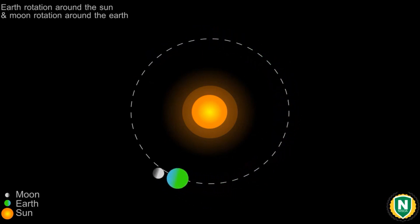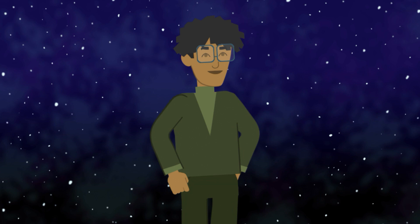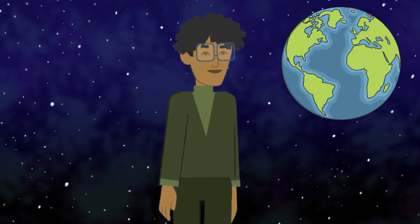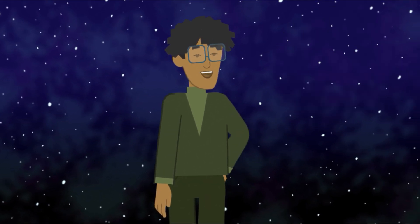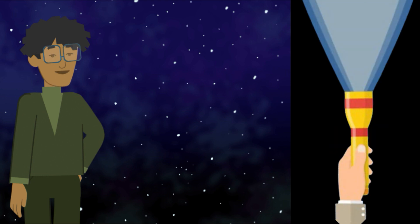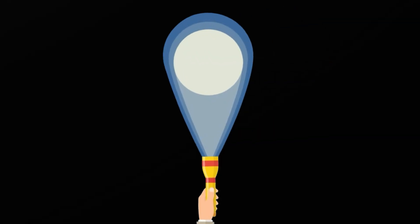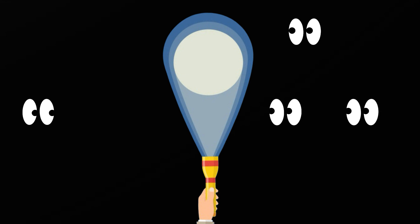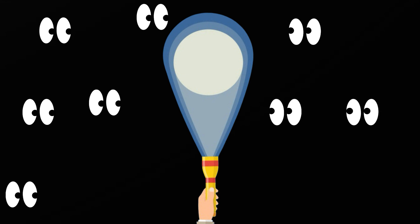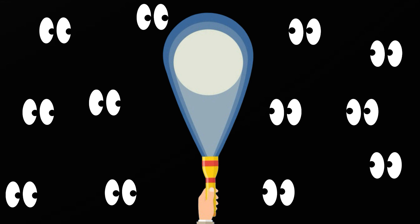As the moon orbits earth, different portions of its surface are illuminated by the sun, and we see these changes from our vantage point on earth. Imagine a flashlight shining on a ball in a dark room. If you walk around the ball, you'll see different parts of it lit up depending on your angle. This is similar to how we see the moon's phases.